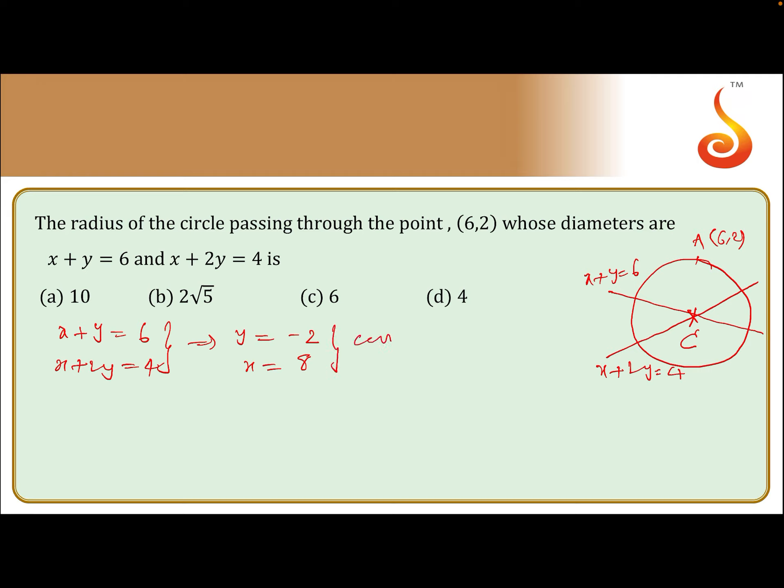The center of the circle C is (8,-2) and the circle passes through point A(6,2). The radius is CA, which equals √[(8-6)² + (-2-2)²] = √[4 + 16] = √20 = 2√5.